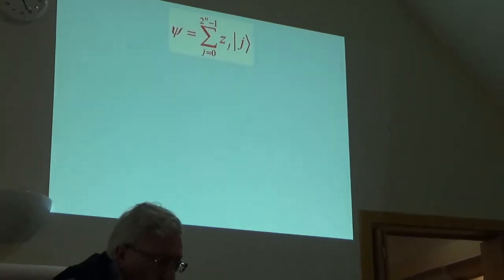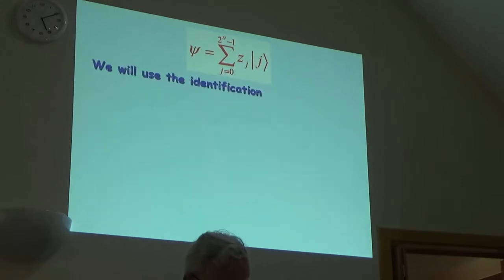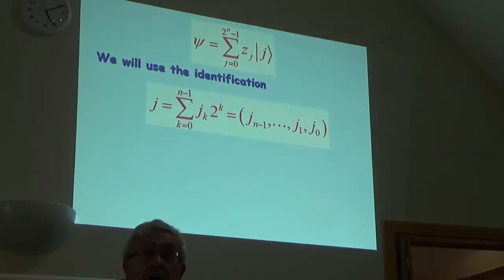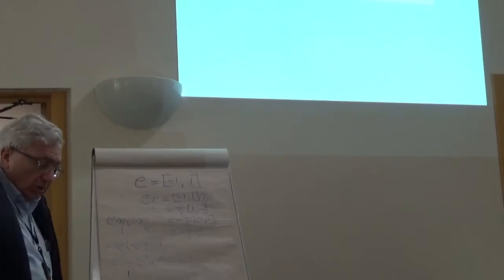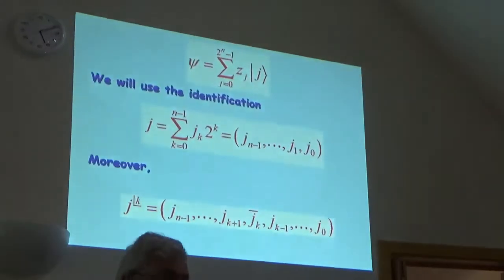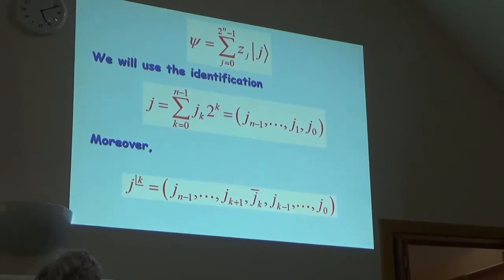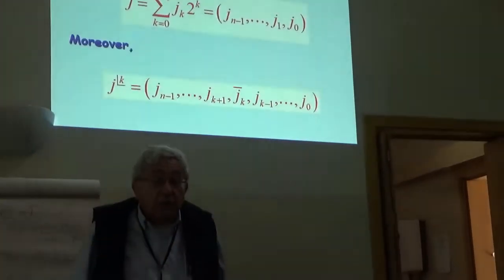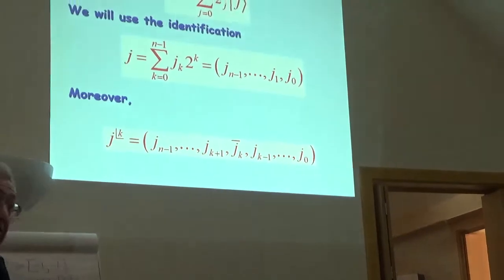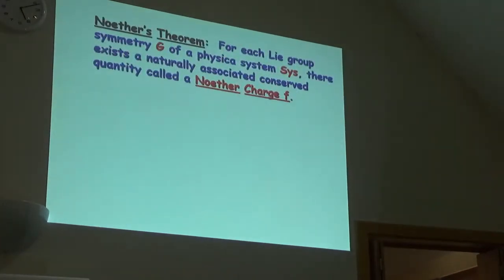Here we have a state of an n-cubit quantum system. We will use the identification. Following that identification, we'll identify each integer with a binary string. We'll go back and do it. This will mean the equation is much simpler. So, if you have the number 5, you can identify it with the string 1, 0, 1, and so forth. Under this identification, we'll use the following notation. This denotes the integer formed by actually complementing the kth bit. That's what the notation means. We'll come back to that later. More than this theorem.